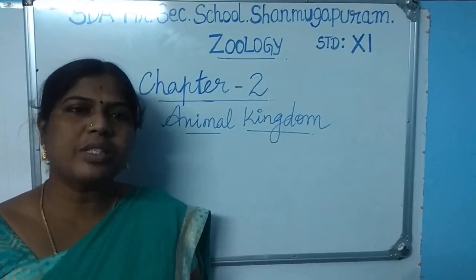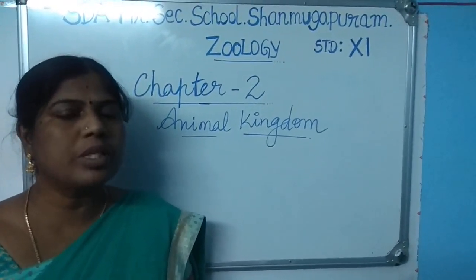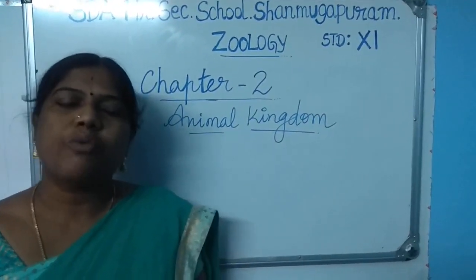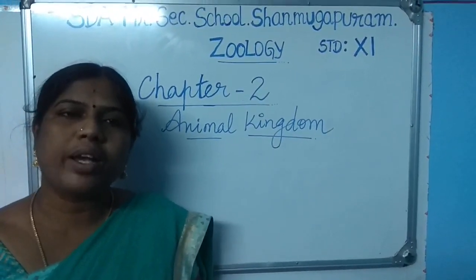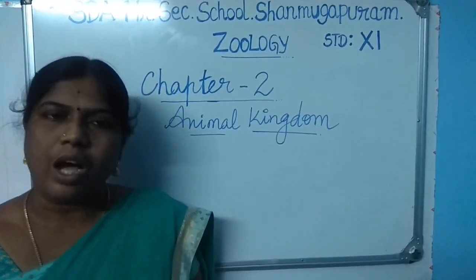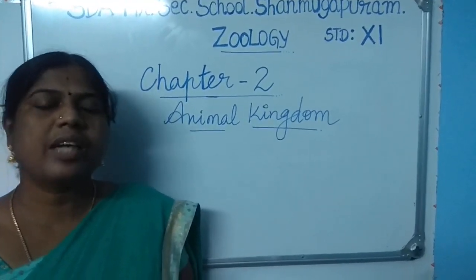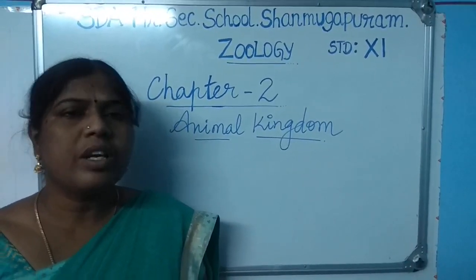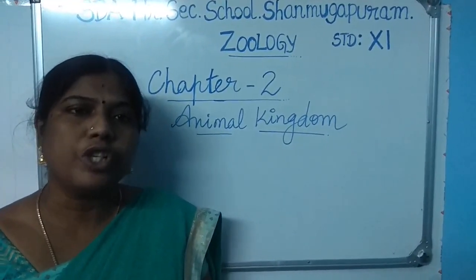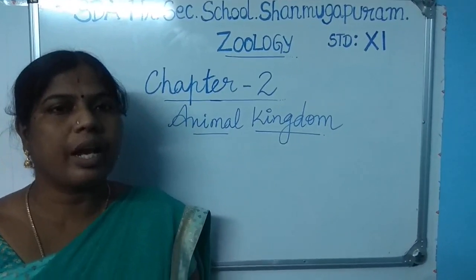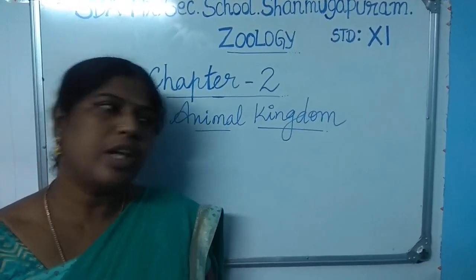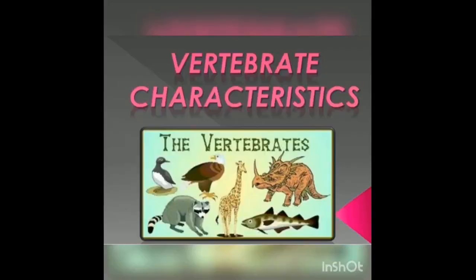Good afternoon students. Once again I am welcoming you all to this online class. In morning session we have completed Phylum Annelida to Phylum Hemichordata. Now we will discuss the general characters of Phylum Vertebrata, which includes different classes such as Fishes, Amphibians, Reptiles, Aves, and Mammals. Let's go into the video. First we start with Vertebrate Characters.